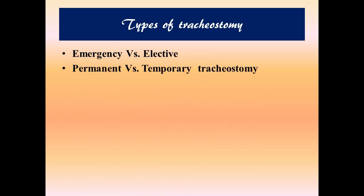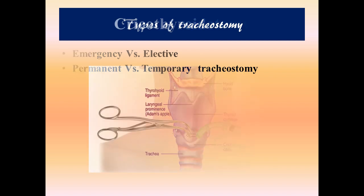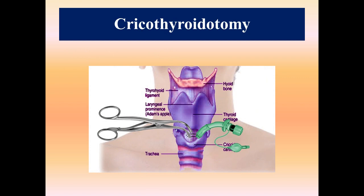There are various types of tracheostomy. First is emergency versus elective: in an emergency tracheostomy there is an acute incident of upper airway obstruction, while in an elective case — such as cancer of the larynx — the patient is taken for a planned tracheostomy. Temporary versus permanent is time-based: a tracheostomy done for an acute incident is temporary, while one that stays long-term is permanent.